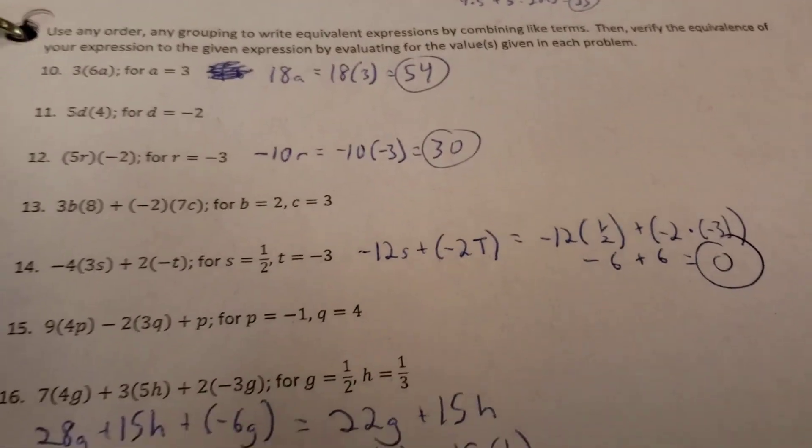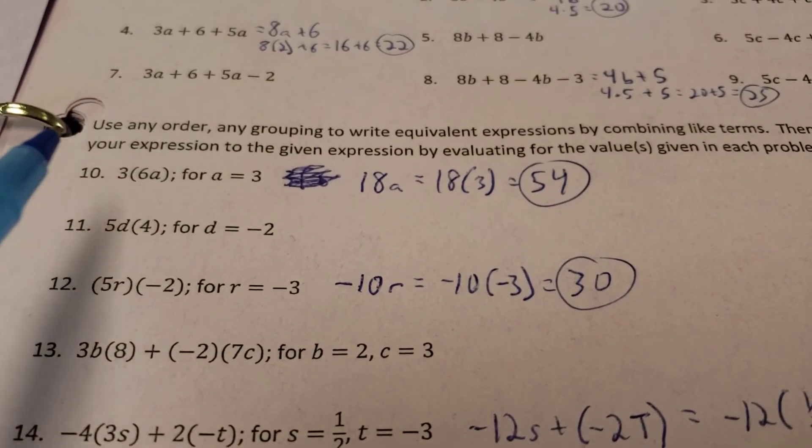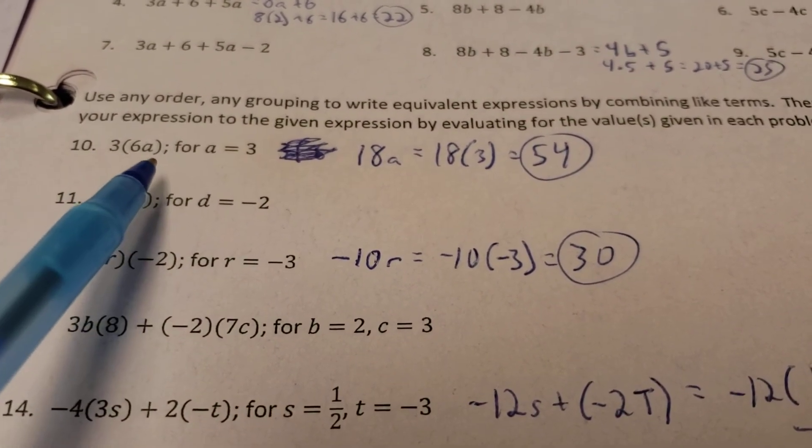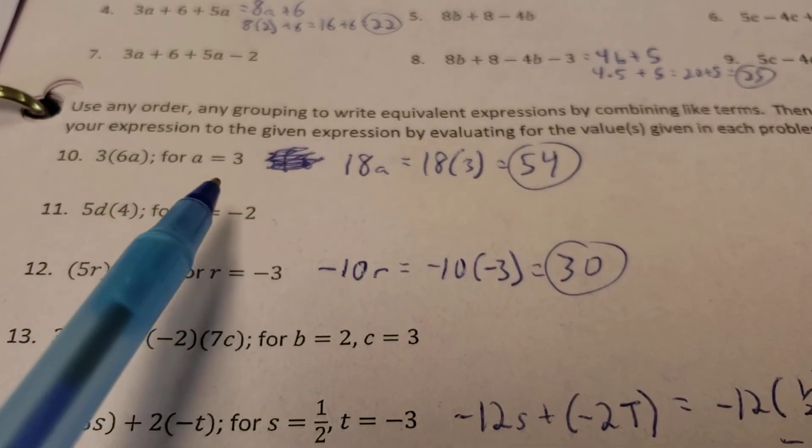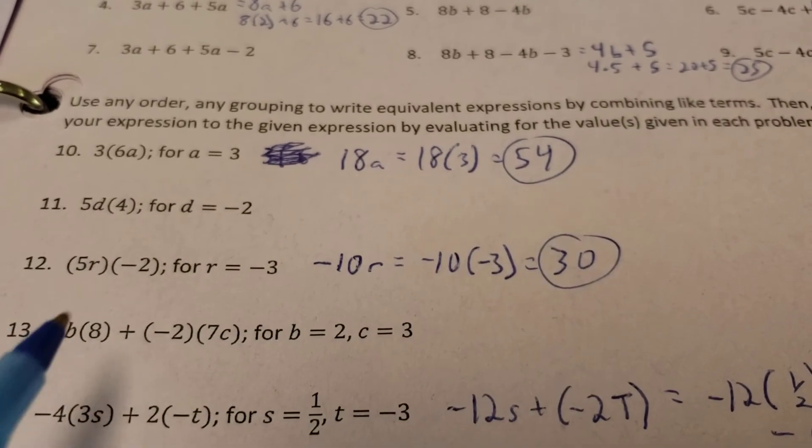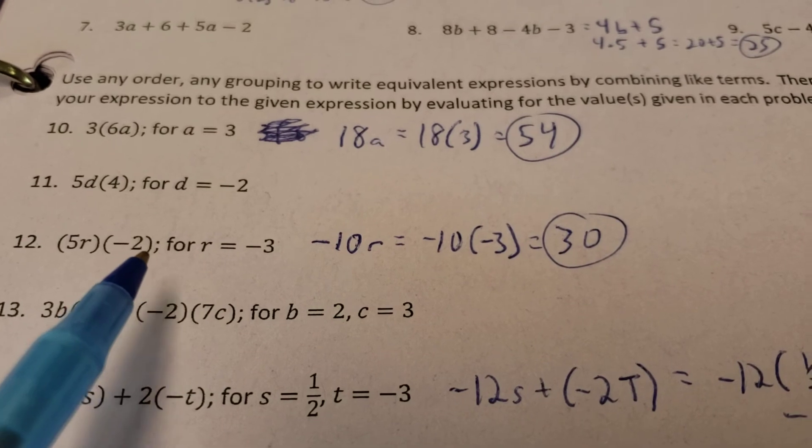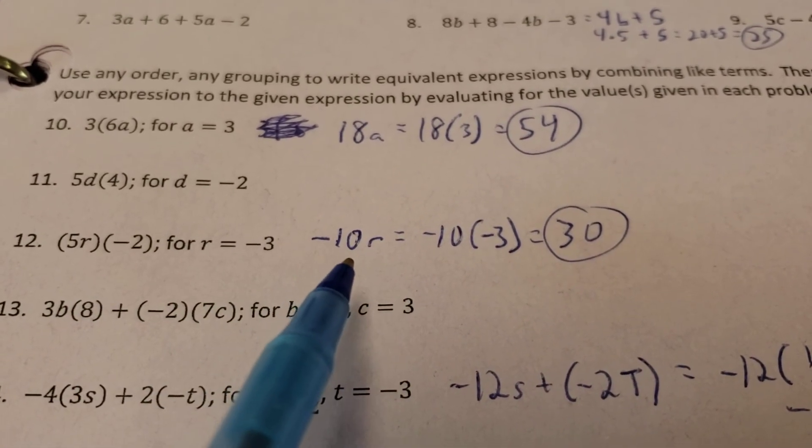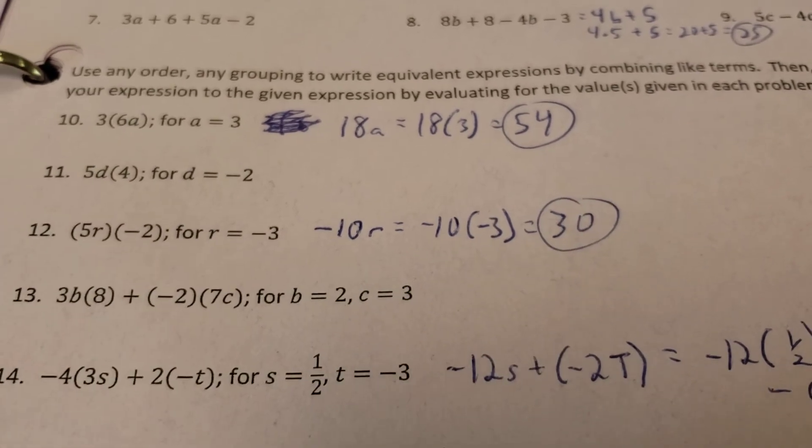Alright, next up. Alright, let's take a look at numbers 10 through 16's group. 3 times 6a. Well, 3 times 6 gives me 18 of the a's. a is supposed to be a 3 based off of this information now. 18 times 3 gives me 54. 5r times a negative 2. Well, that gives me 5 times negative 2 gives me negative 10 times r. And if r is supposed to be a negative 3, negative 10 times a negative 3 gives me a positive 30.